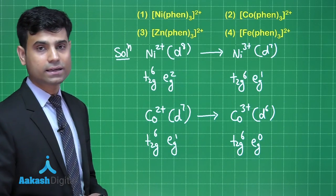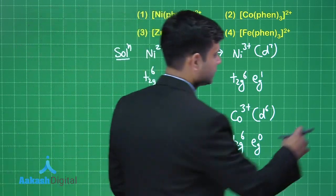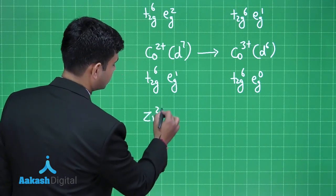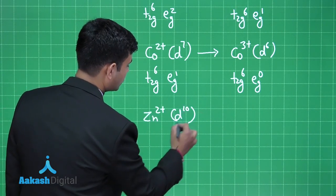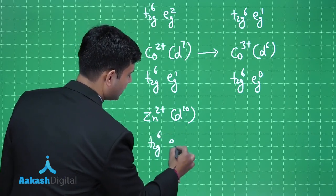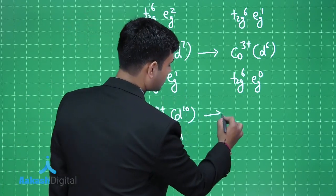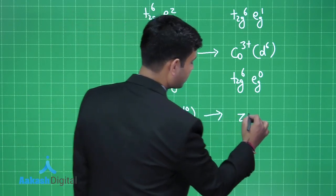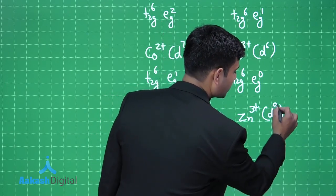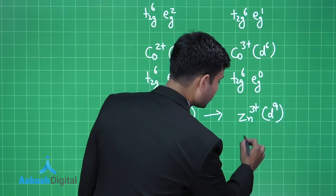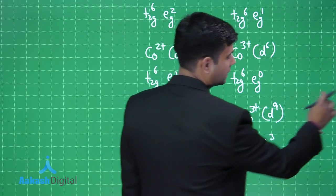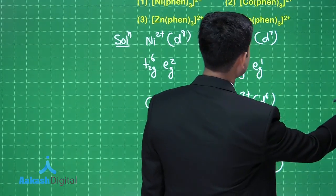Third case is Zn2+, t2g6 eg... and when it is oxidized it will give us Zn3+, it will have d9 configuration, so the configuration will be t2g6 eg3. Now the last option given here is Fe.